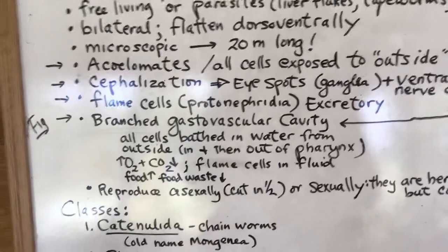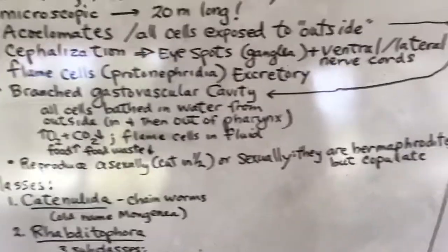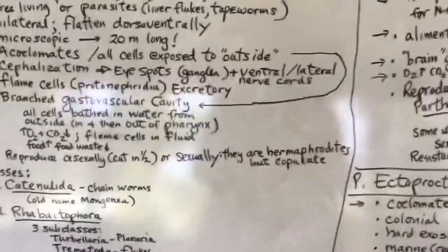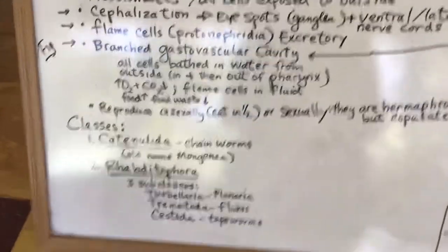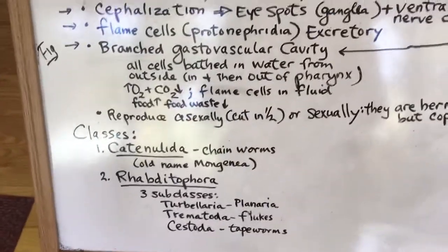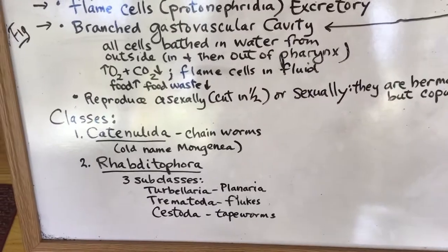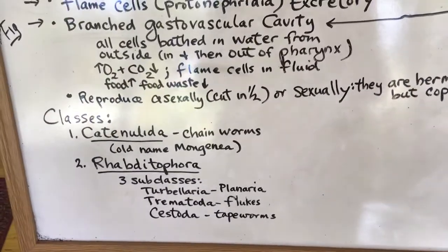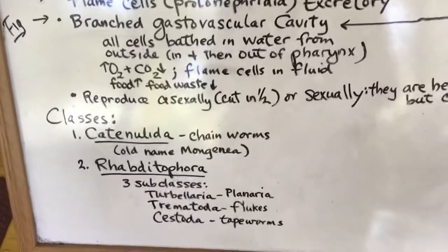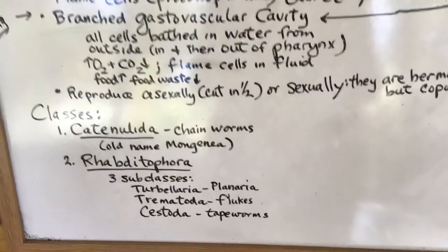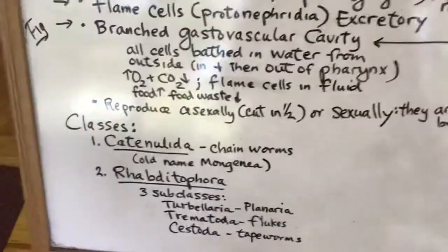They reproduce asexually — you can cut them in half and it will make another — or they can reproduce sexually. They are hermaphroditic, meaning they are both male and female, but they do copulate, and they'll fertilize each other. The classes are Catenulida (chain worms), and Rhabditophora, which has three subclasses: Turbellaria (the planaria — typical flatworms), Trematoda (flukes), and Cestoda (tapeworms).